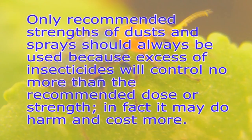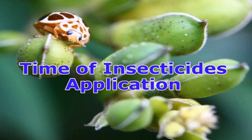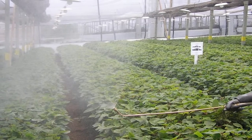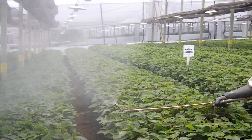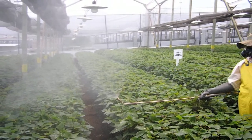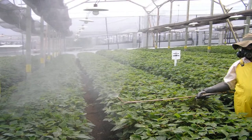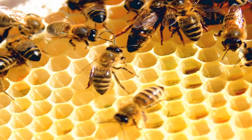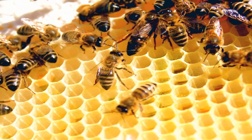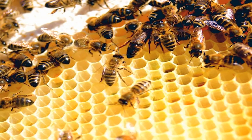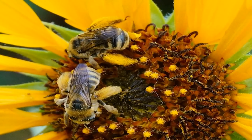Dose of insecticides: only the recommended strength of dust and spray should always be used, because excess insecticides will control no more than the recommended dose and may do harm and cost more. Time of application: insecticides should be applied in the morning or evening hours when the weather is calm, or else they will spread to unwanted areas and may not hit the target. Precaution before use: before application, it must be ensured there are no pollinators like bees in the area, and insecticides should not be applied during blossoms when bees are likely to be at work.